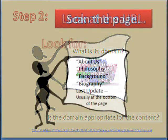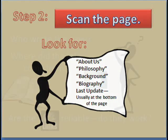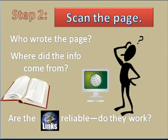Next, scan the page for links to About Us, Philosophy, Background, or Biography. Look for the date indicating when the page was last updated — this information is usually found at the bottom of the page. Look for dates on all the pages of the site. Search for the author's name, or the name of the organization, institution, or agency responsible for the information on the page. An email address is not sufficient identification.